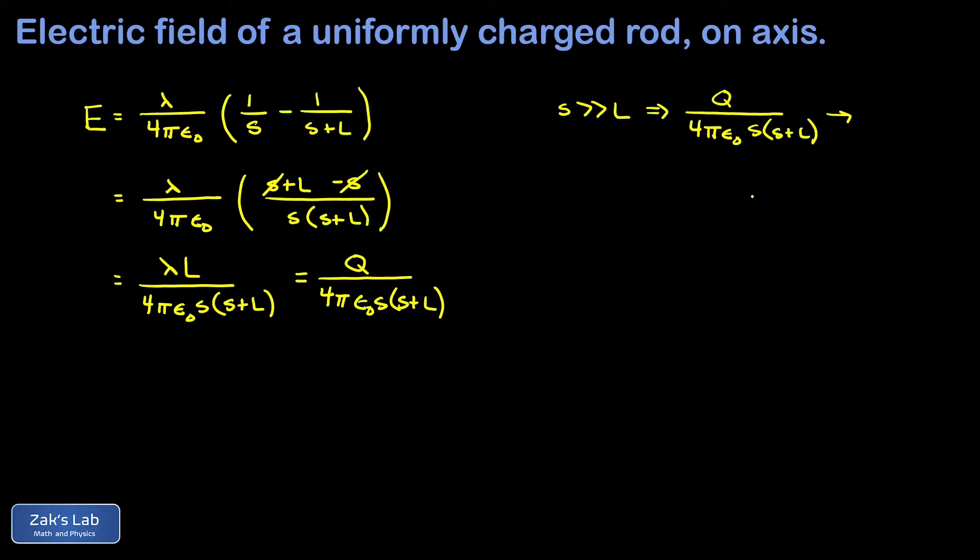So in that limit as s becomes much greater than L, it's in this term right here that we can make our approximation. We have an s plus L. If s is way bigger than L then the L becomes negligible. And this leaves us with the expression Q over four pi epsilon zero s squared where s is the distance from the tip of the rod.